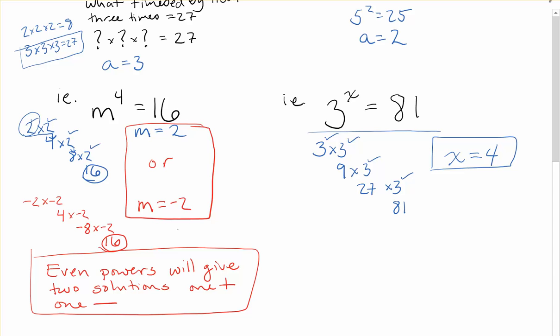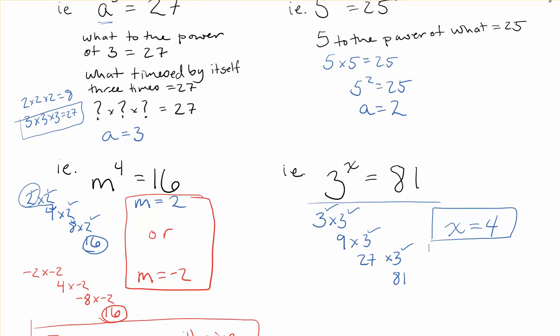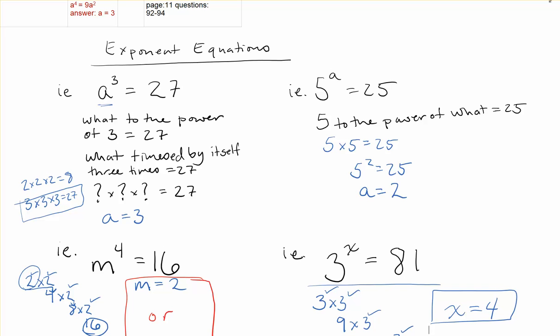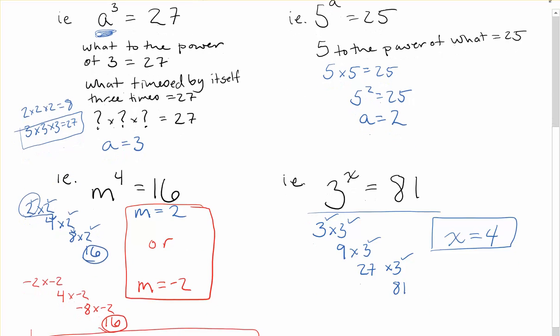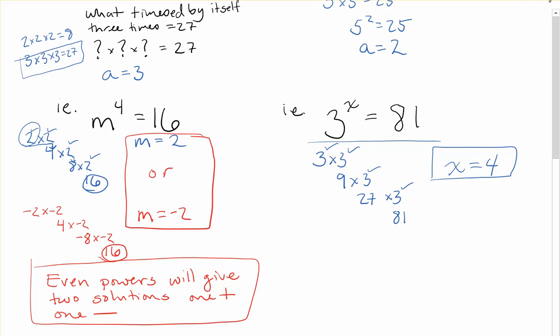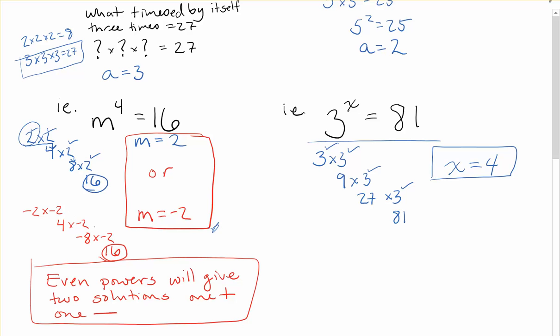We'll look at more examples involving more than one step next, but remember: don't be afraid to say these problems into words for yourself. What times itself three times equals 27? How many times does 5 multiply itself to get 25? Use trial and error — start at 2, try 3, 4, 5, 6, keep trying until you find the one that works. And watch out: if you're looking for a base with an even power, there are potentially two solutions, one positive and one negative, because the negatives cancel each other out.